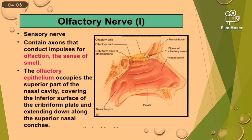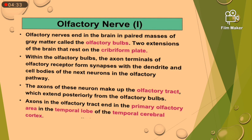The first cranial nerve is the olfactory nerve. It is a sensory nerve, contains axons and conducts impulses for olfaction — the sense of smell. The olfactory epithelium occupies the superior part of the nasal cavity, covering the inferior surface of the cribriform plate and extending down along the superior nasal conchae. The olfactory nerve enters the brain in paired masses of grey matter called the olfactory bulb, two extensions of the brain that rest on the cribriform plate. Within the olfactory bulb, the axon terminals of olfactory receptors form synapses with the dendrites and cell bodies of the next neuron in the olfactory pathway.